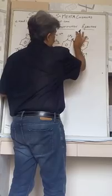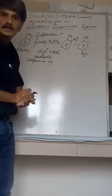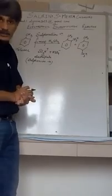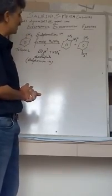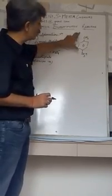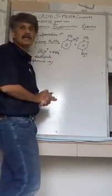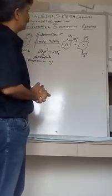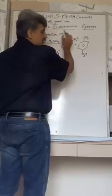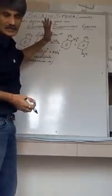As a result you will get two compounds here. You can see the positions are ortho and para, so the nomenclature, the naming also will be done accordingly. This is toluene, and at ortho position you have SO3H, that is sulfonic acid.